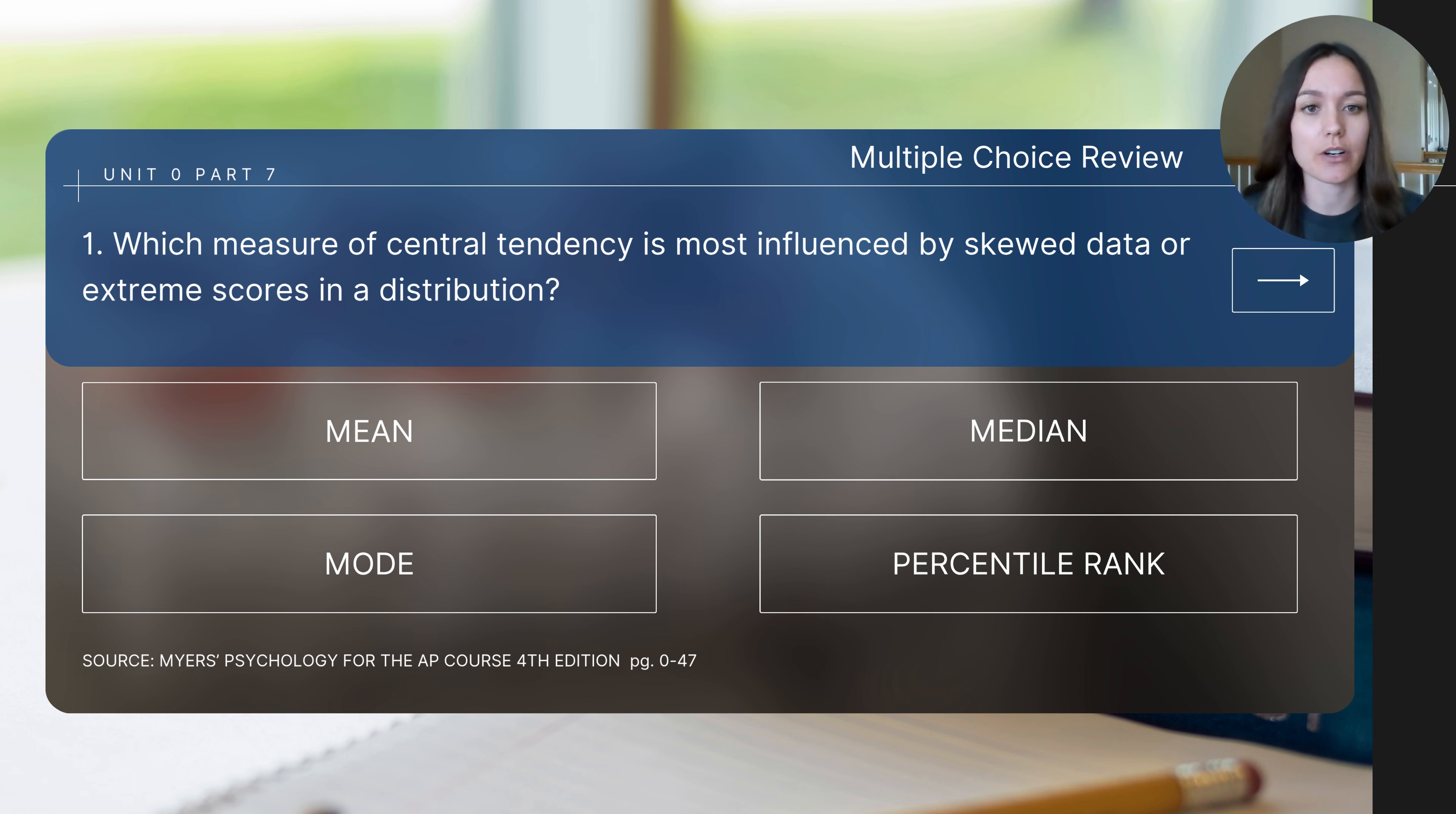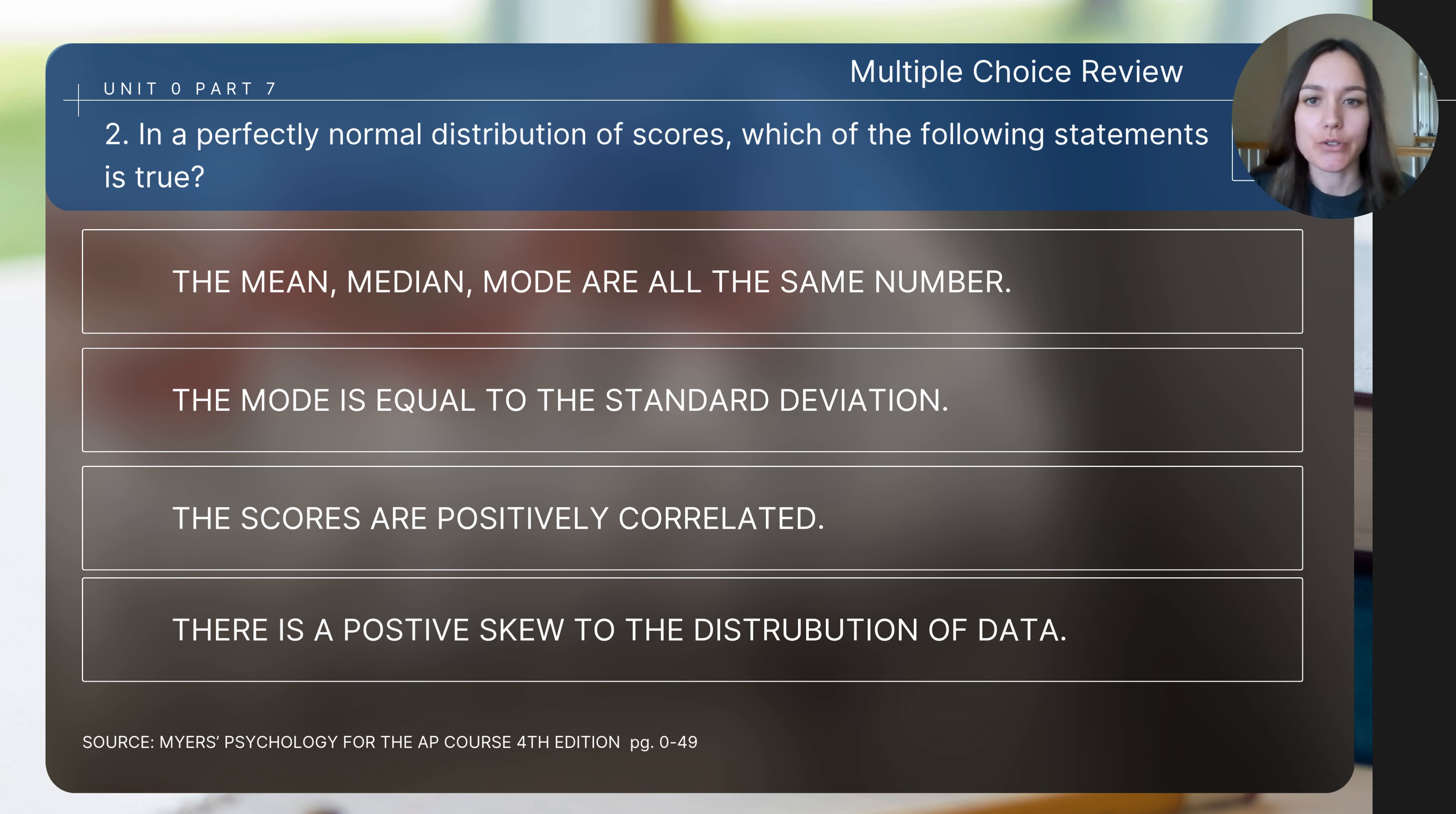So question number one says, which measure of central tendency is most influenced by skewed data or extreme scores in a distribution? Question number two says, in a perfectly normal distribution of scores, which of the following statements is true?